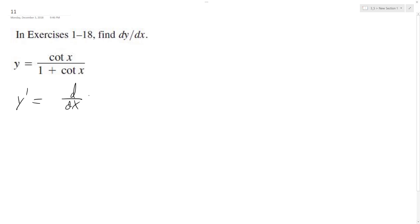So we get d/dx times the cotangent of x and then times quantity 1 plus the cotangent of x minus cotangent of x and then the derivative of 1 plus cotangent of x all over 1 plus the cotangent x squared.